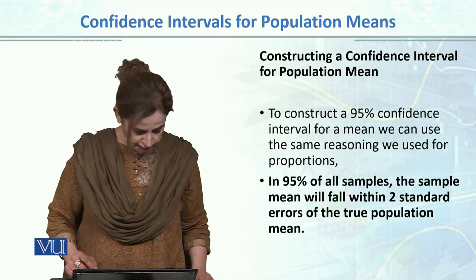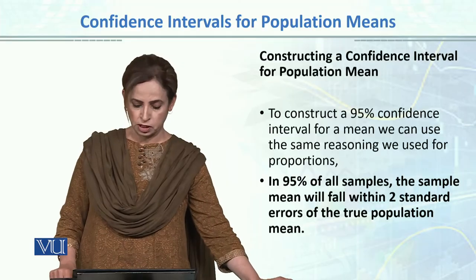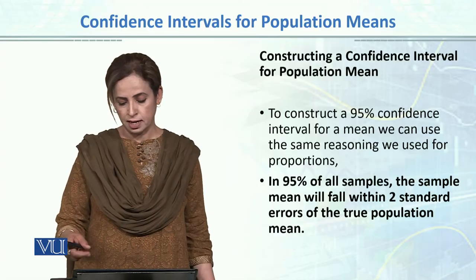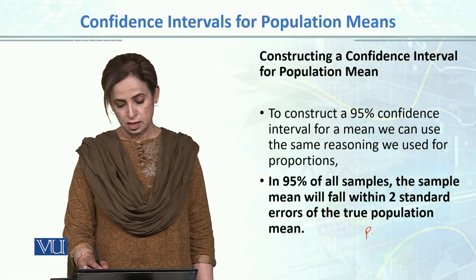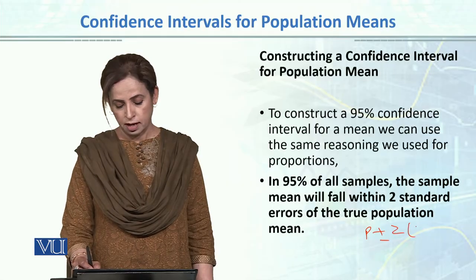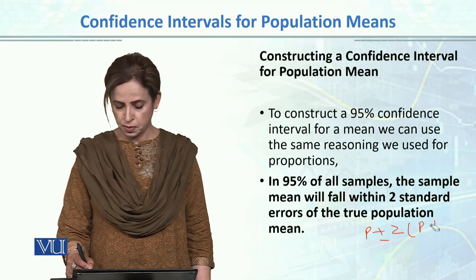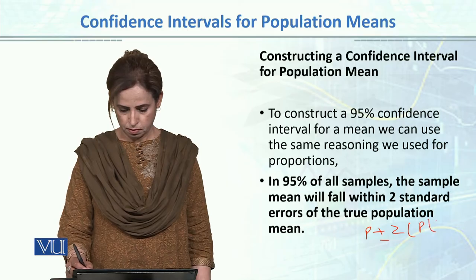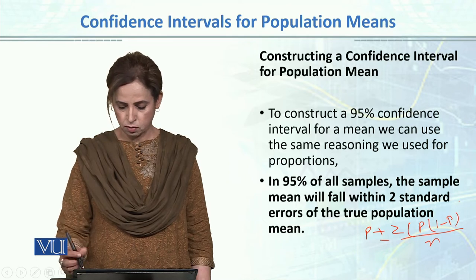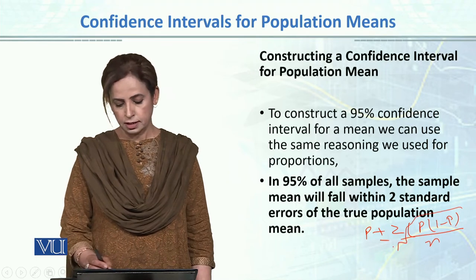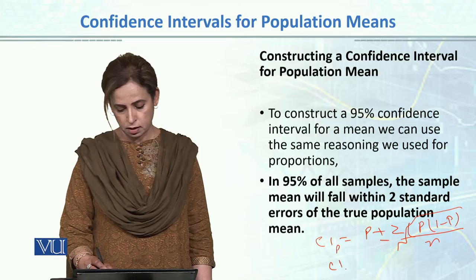How do we construct a confidence interval? Our formula is what we found for confidence intervals for population proportion. We used sample proportion plus or minus z times standard error, which was equal to p plus or minus z times the square root of p(1-p) divided by n.